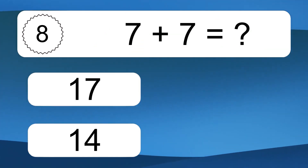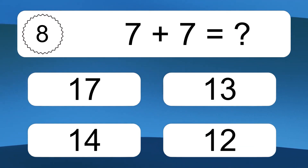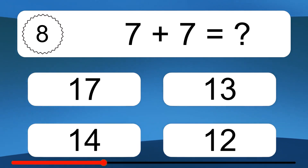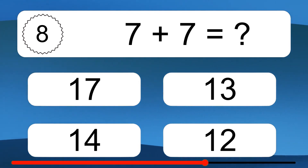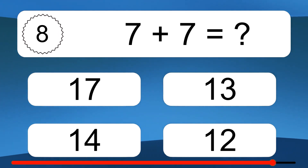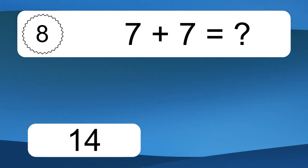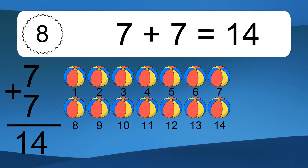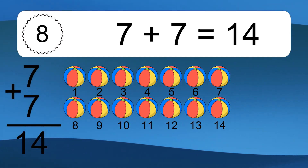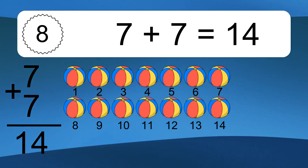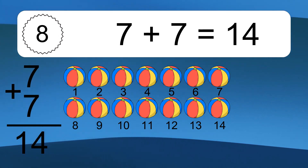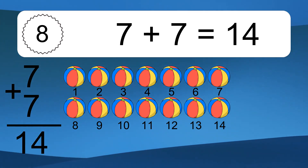7 plus 7 equals what? 7 plus 7 equals 14. Let's count it: 1, 2, 3, 4, 5, 6, 7, 8, 9, 10, 11, 12, 13, 14.